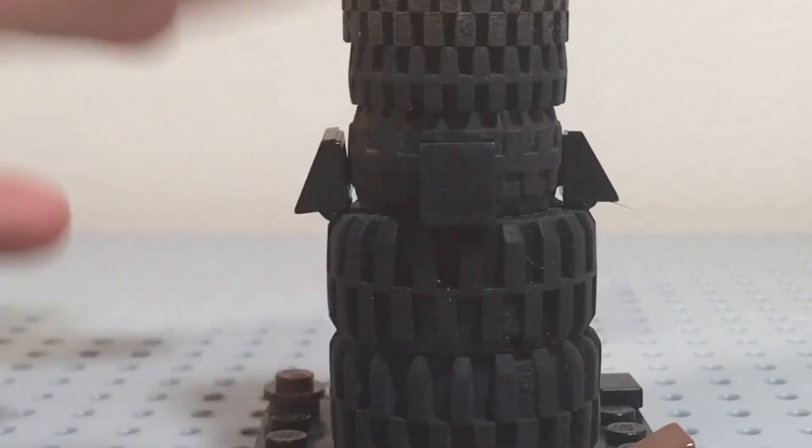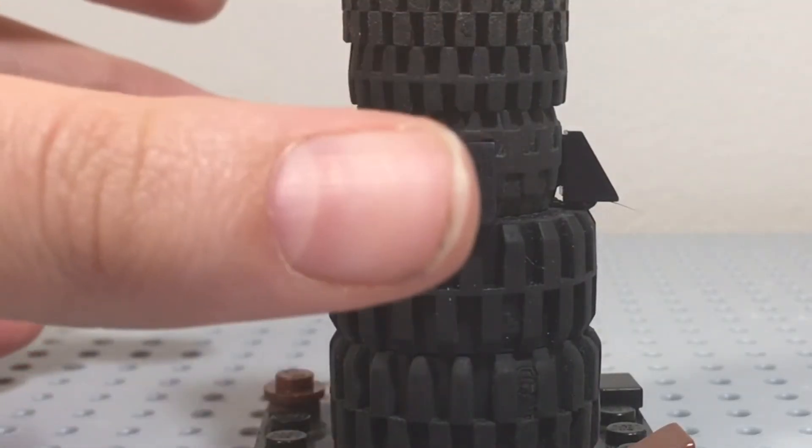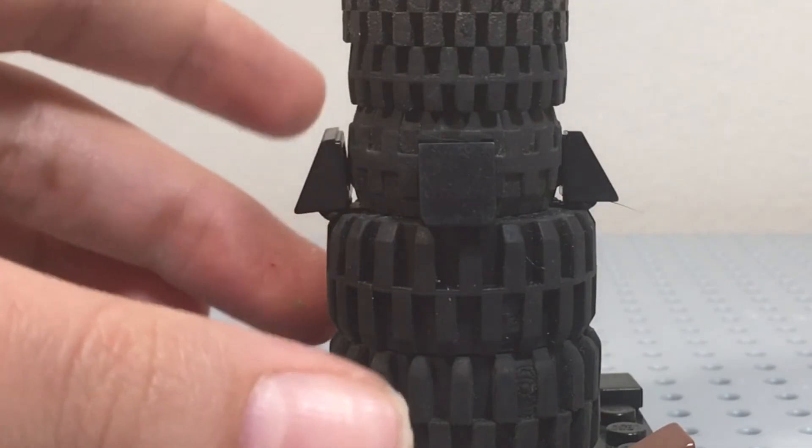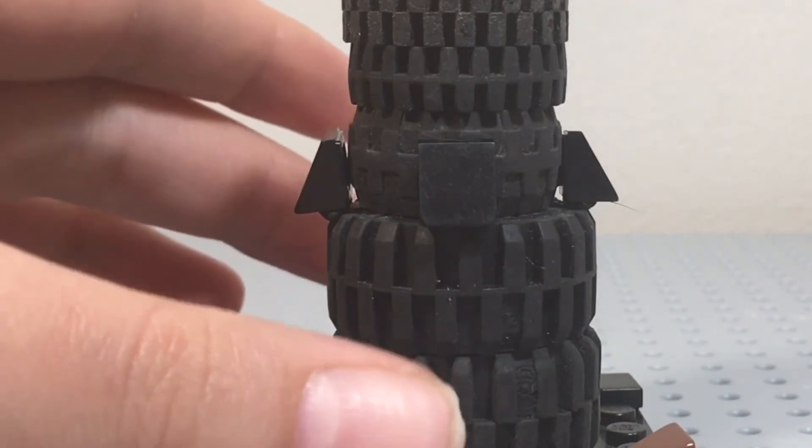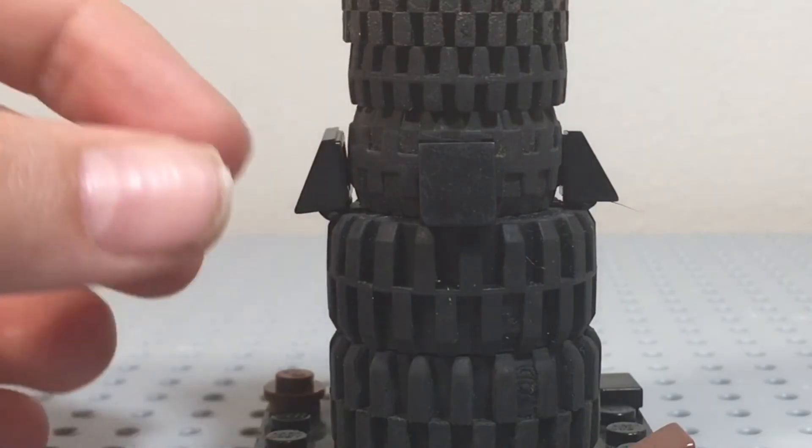And then the rest of the tower here is actually made of just tires. They just look the best because they have that detail on them still and they have those little notches, so it's pretty cool.